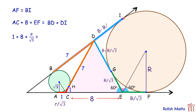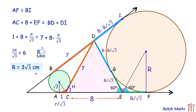The length DG equals 8 minus r over √3. From external point D, two tangents are drawn, so DI equals DG, which is 8 minus r over √3 centimeters. Therefore, length BI equals BD plus DI, which is 7 plus 8 minus r over √3. Setting AF equal to BI and solving, bringing r terms to one side gives 2r over √3 equals 6, so r equals 3√3 centimeters. That's our answer — I hope you enjoyed the solution, see you in the next video!